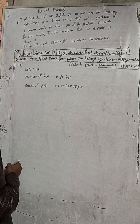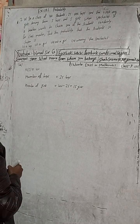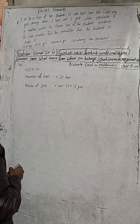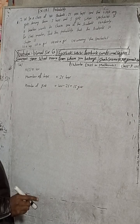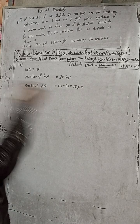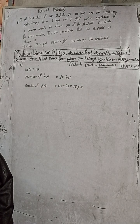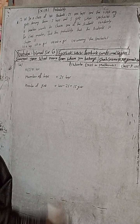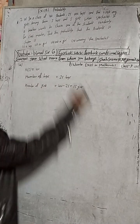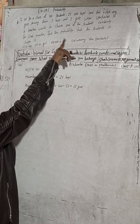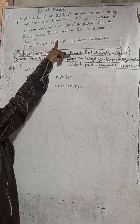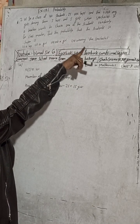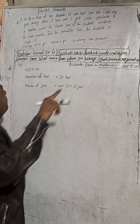Among them, three boys and five girls wear spectacles. If a teacher wants to choose one student randomly for class monitor, find the probability that the student chosen is: (a) a boy, (b) a girl, (c) not a girl, and (d) a student wearing spectacles.